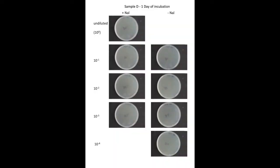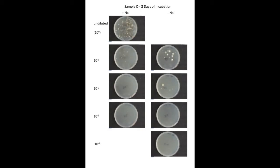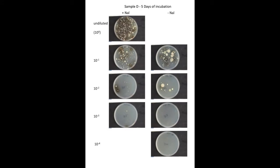In the following sequence we can see colonies appearing from our dilutions of soil sample D over six days of incubation. By day two the fastest growing colonies have appeared. Over the next three days new colonies appear and existing colonies get larger, especially on the plates without nalidixic acid. As expected, there are fewer colonies on the more dilute soil samples.